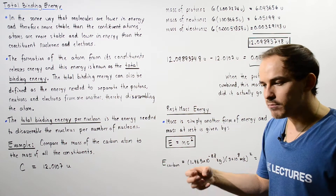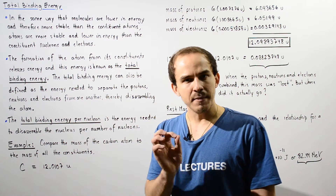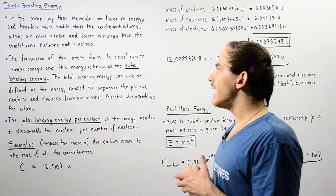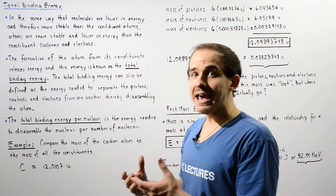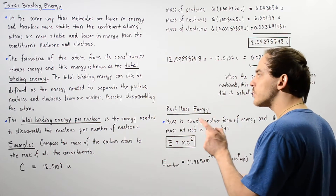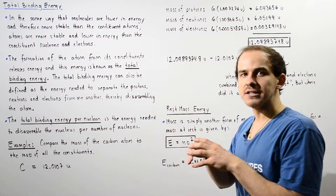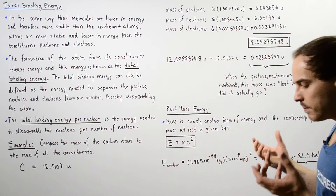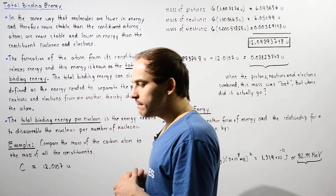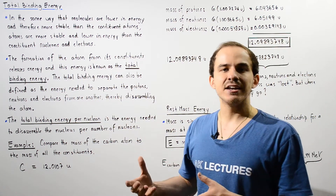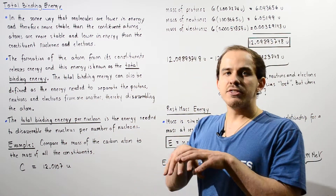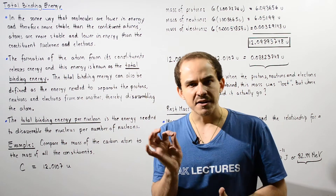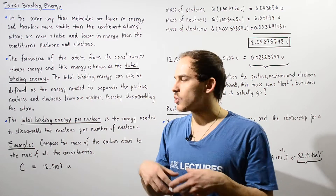If we form an atom and that releases energy, to break the atom means we must actually input a certain quantity of energy. So the total binding energy can also be defined as the energy that is required to separate the protons, neutrons, and electrons from one another, thereby disassembling and breaking our atom apart. We can also define something known as the total binding energy per nucleon. This is simply the total binding energy — the energy needed to break apart our atom — divided by the number of protons and neutrons in our nucleus.